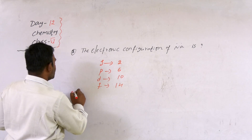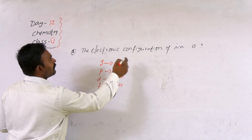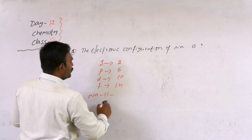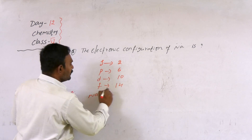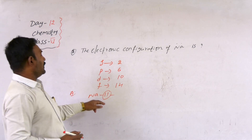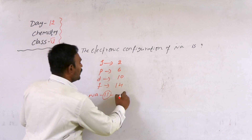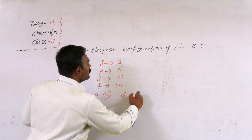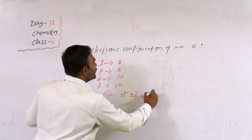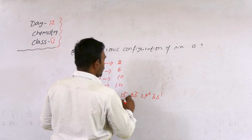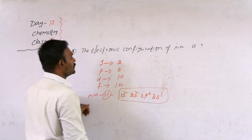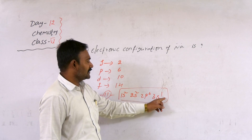Now, the electronic configuration of sodium: atomic number 11, meaning 11 electrons are present. So the configuration is 1s2, 2s2, 2p6, 3s1.